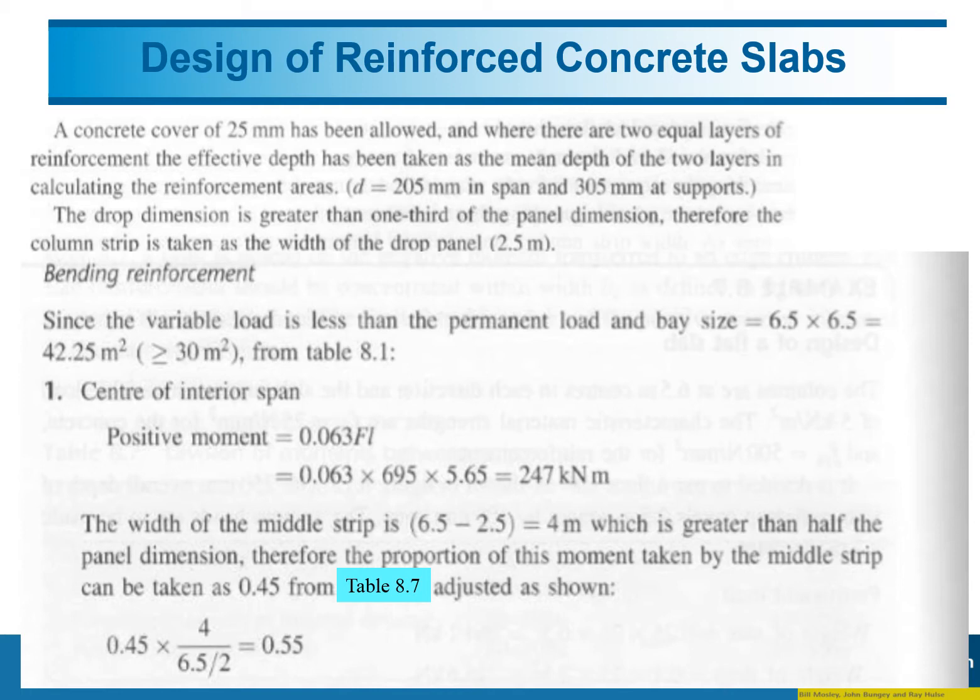For the initial design, you need to assume the diameter of the main bar. At the support, the effective depth is 305 mm. Previously, the slab thickness is 350 mm, so 350 minus the concrete cover of 25 minus diameter of bar.